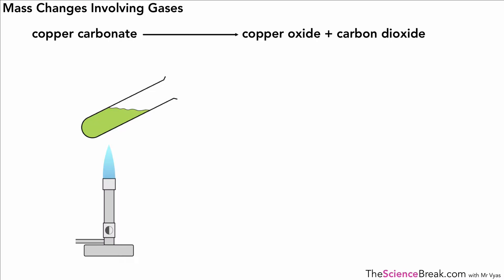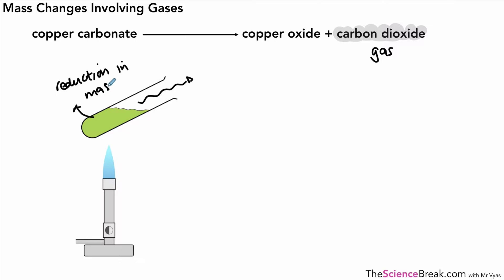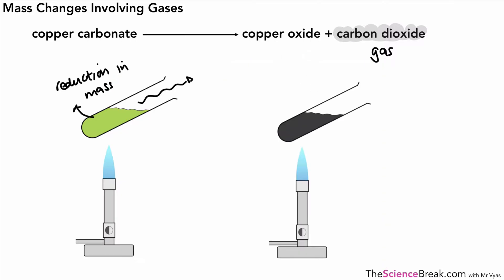Sometimes we can be fooled by a chemical reaction. Copper carbonate thermally decomposes into copper oxide and carbon dioxide gas. If you weigh the reactants and products, you see a reduction in mass — the copper carbonate seems to lose mass becoming copper oxide. But we must remember that carbon dioxide is a gas given off to the atmosphere, which is why we seemingly have a reduction in mass. In actual fact, if you add the carbon dioxide and copper oxide together, the mass equals the original copper carbonate.